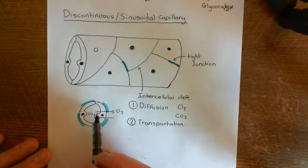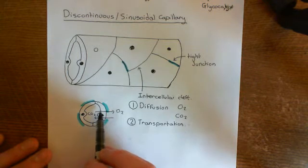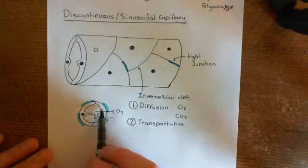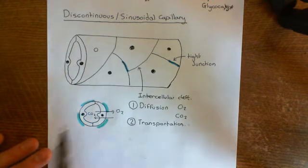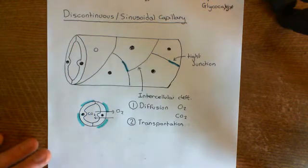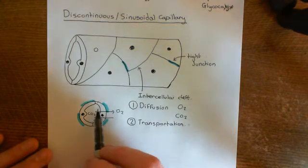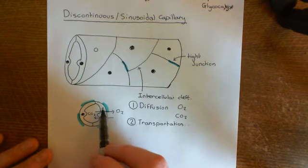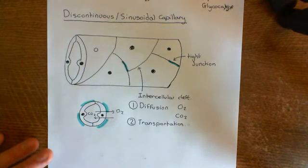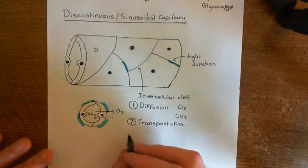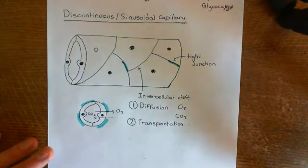Certain things can be transported by proteins that are in both membranes — it'll be transported across the apical membrane, go into the cytoplasm, and then be transported across the basolateral membrane. Alternatively, some things will actually be endocytosed into vesicles, and then the vesicle will be transported across the cell and exocytosed on the basolateral side. Both of those are forms of transportation.